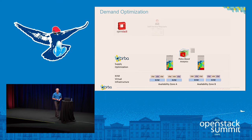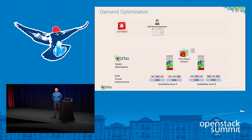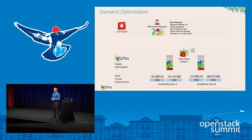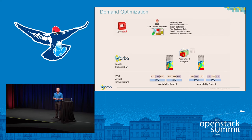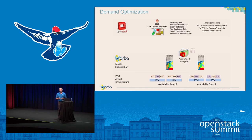That's the supply-side optimization. Now let's talk about demand. What we typically see are brand new workloads coming online — somebody using the OpenStack customer portal asking for a new application. It may represent five to ten VMs, requires Red Hat OS, Oracle database, has customer data on it, needs certain SAN tier storage, and should run on the West Coast. This is almost like a manifest of requirements. The issue with handling that today is simple scheduling — there's no consideration for existing loads running in the environment.